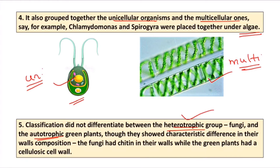The next problem was that people could not differentiate between heterotrophic and autotrophic organisms. Heterotrophs cannot prepare their own food and are dependent on other organisms, while autotrophs prepare their own food with the help of sunlight. Additionally, fungi and plants both have cell walls, but their cell wall composition is very different — the plant cell wall is made up of cellulose, whereas the fungal cell wall is made up of chitin. Yet they were included in one group.